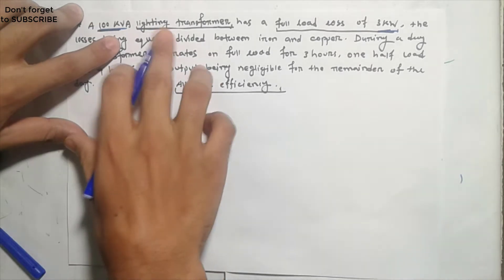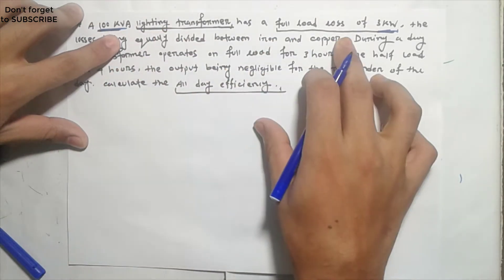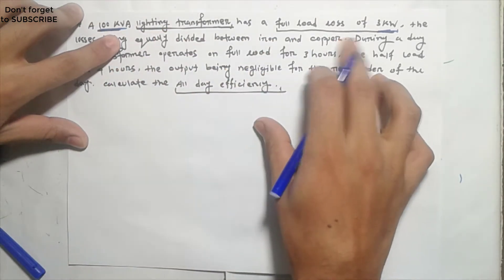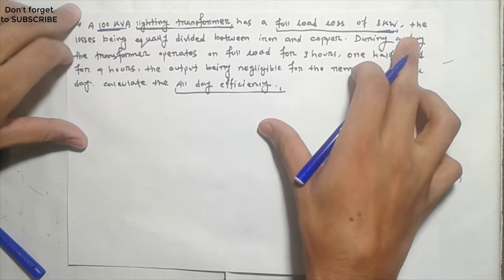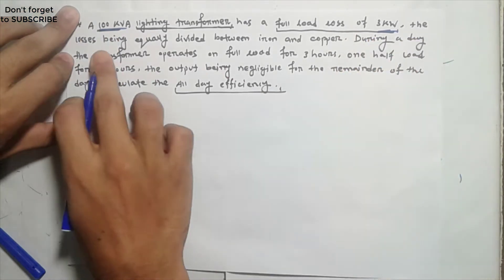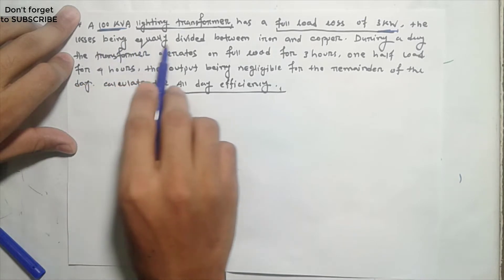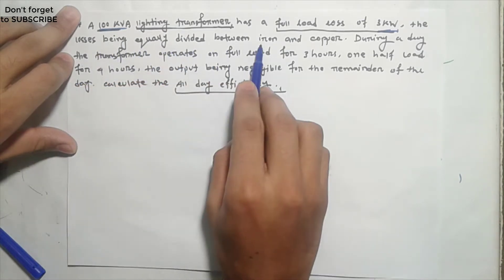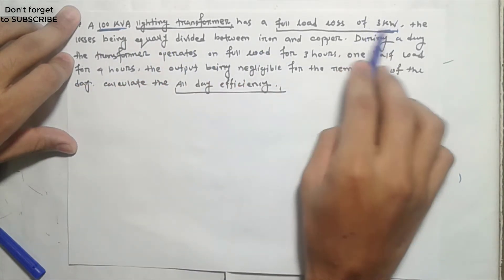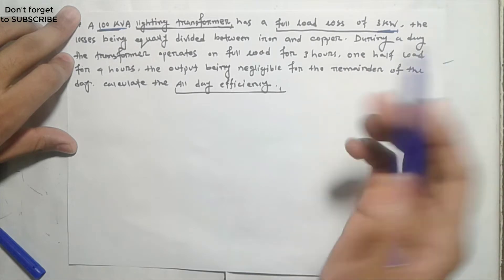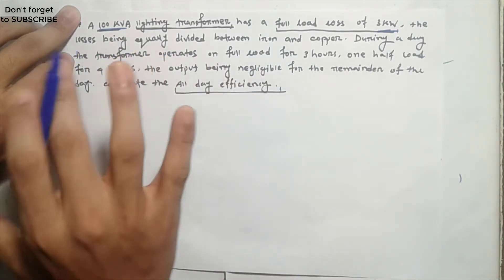The lighting transformer operates at full load. It has a full load loss of 3kW. The loss is equally divided, meaning iron loss is equal to copper loss. So full load total loss is 3kW, and iron loss equals copper loss.